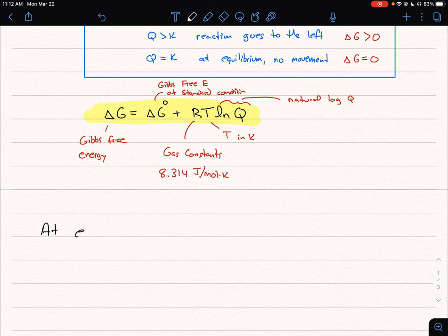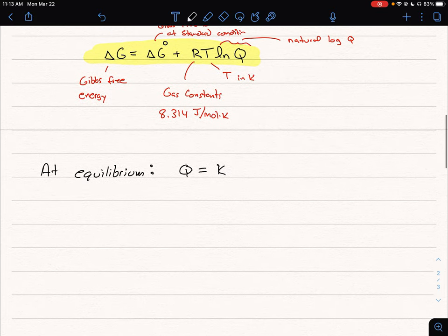So what if we are at equilibrium? What do we know? So at equilibrium we know Q is equal to K and we know delta G is equal to zero.